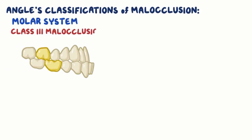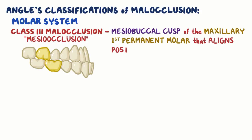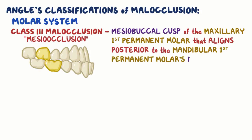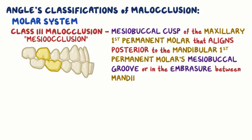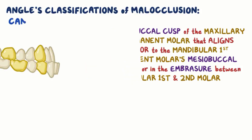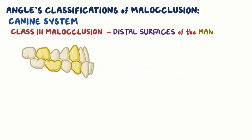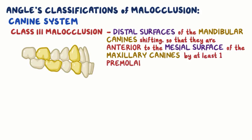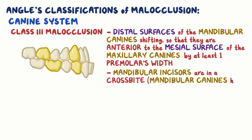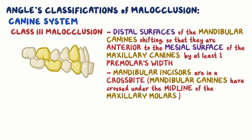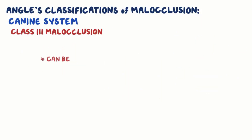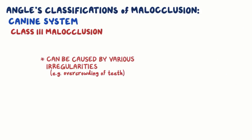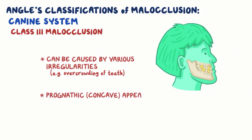In the molar system, class III malocclusion, also called mesioocclusion, is characterized by a mesiobuccal cusp of the maxillary first permanent molar that aligns posterior to the mandibular first permanent molar's mesiobuccal groove, or in the embrasure between mandibular first and second molar. In the canine system, class III is characterized by the distal surfaces of the mandibular canines shifting so that they are anterior to the mesial surface of the maxillary canines by the width of at least one premolar. The mandibular incisors are also in a crossbite, meaning the mandibular canines have crossed under the midline of the maxillary molars and have become the more lingual of the two teeth. This can be caused by various irregularities including overcrowding of teeth, and results in a prognathic or concave facial appearance from the side.